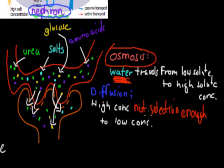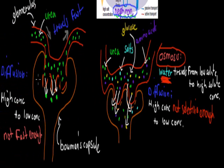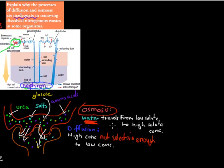Diffusion moves things from high concentration to low concentration, but not just for urea — also for salt, glucose, and amino acids — meaning we're going to lose all of them, and we can't return them back into our blood. And it's not fast enough, so most molecules will just pass by and skip the nephron. Osmosis is not good enough because it just deals with water, and we want to get rid of urea.